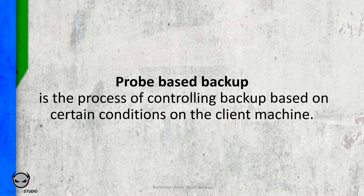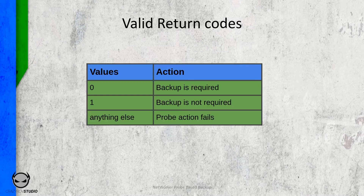This user defined script is any program that passes a return code to the calling service, which is the NetWorker scheduled backup. The NetWorker server detects the script, runs the code, and can interpret two return codes. Return code zero indicates that a client backup is required, which means that whenever a return code of zero is sent back to the NetWorker server, the backup action scheduled to run after the probe action is run successfully.